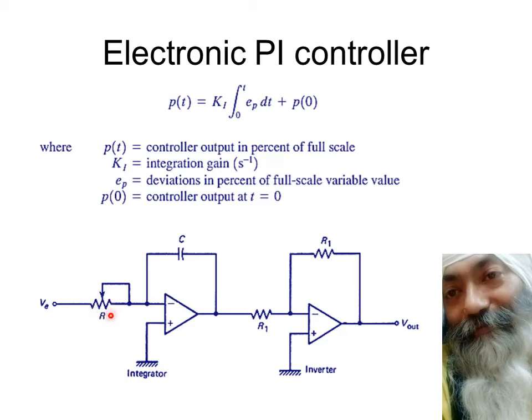Remember, this R is variable. It's easy to have a variable resistance as compared to a variable capacitance. We change all the integral gains - whatever the value of KI you want is represented by this variable R. As you want to change the value of KI, the value of this R is adjusted to get the equivalent value of KI.